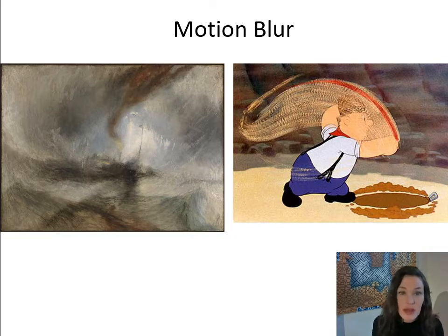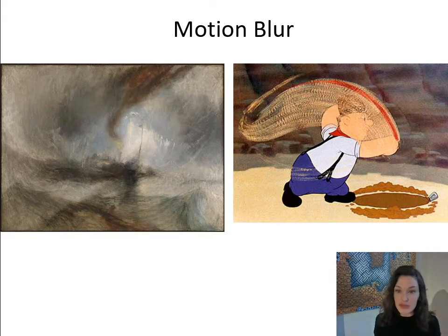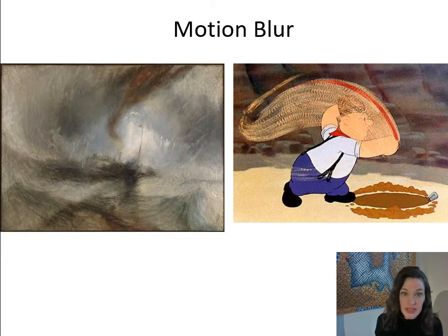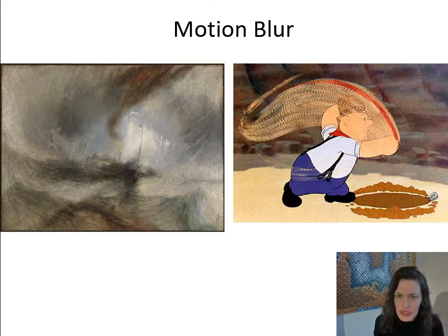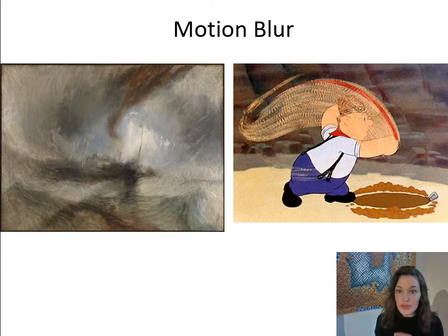Here are two examples of artworks with motion blur depicted. On the left is a painting of a ship during a violent storm at sea by J.M.W. Turner, an English painter from about 100 years ago. On the right appears to be a Warner Brothers illustration showing another example of motion blur used to create a sense of movement in artwork.